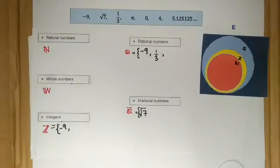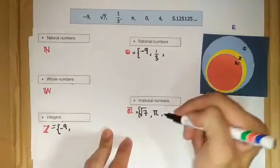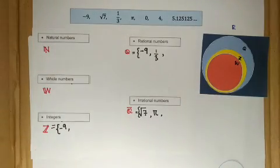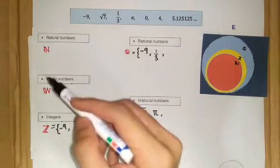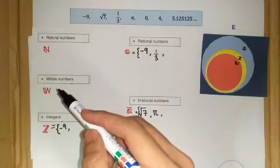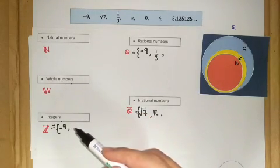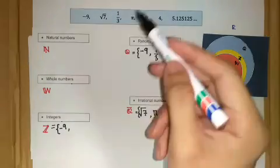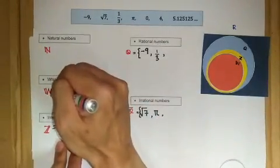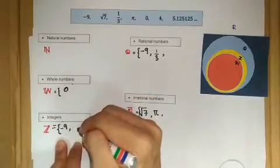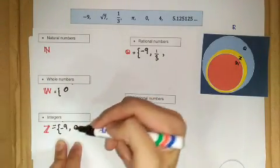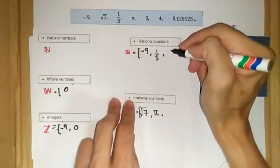What about pi? Pi is irrational numbers — for the same reason, it is not a rational number. What about zero? Zero is not a natural number, but it is one of the elements of whole numbers. Zero is also an integer, and it is also a rational number. So zero is an element of whole numbers, integers, and rational numbers.